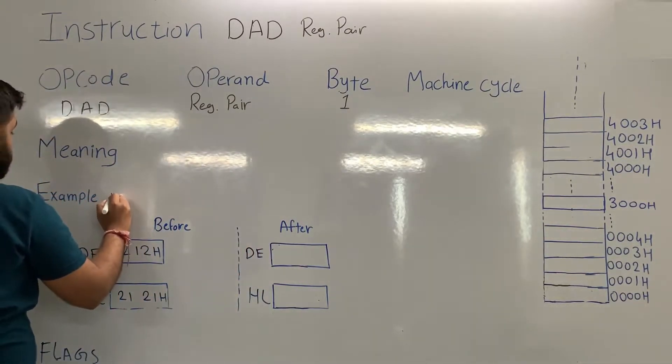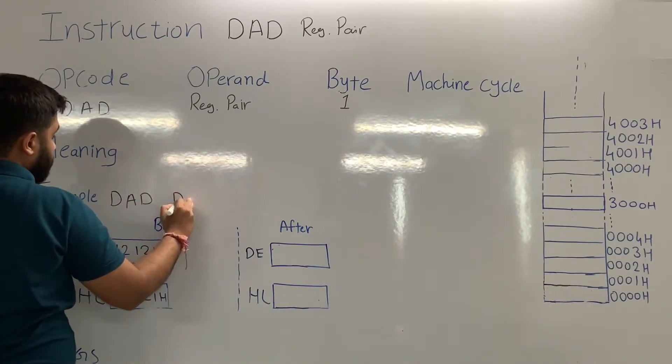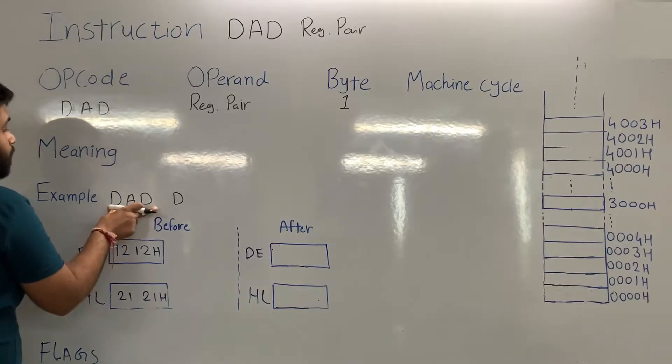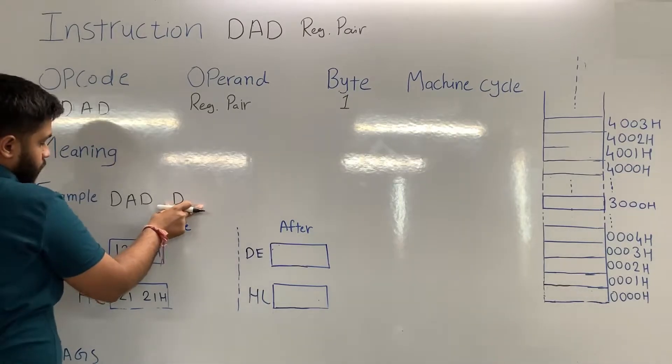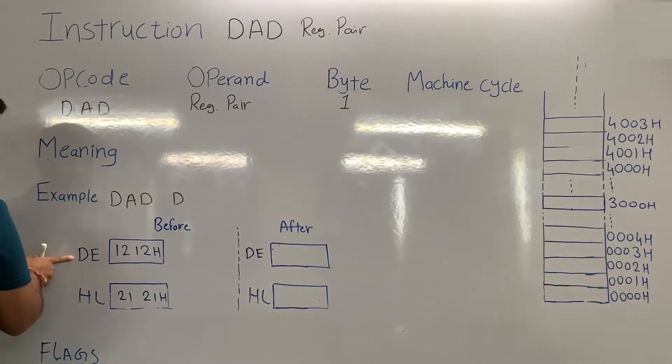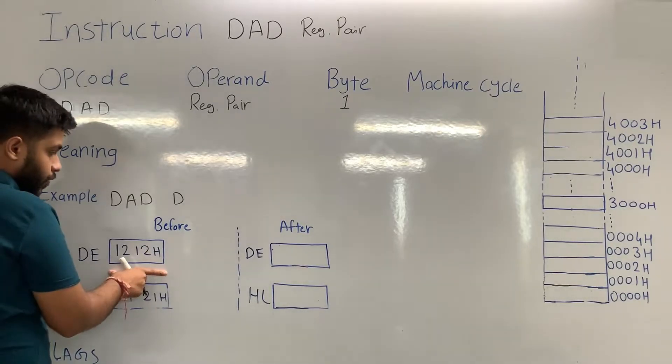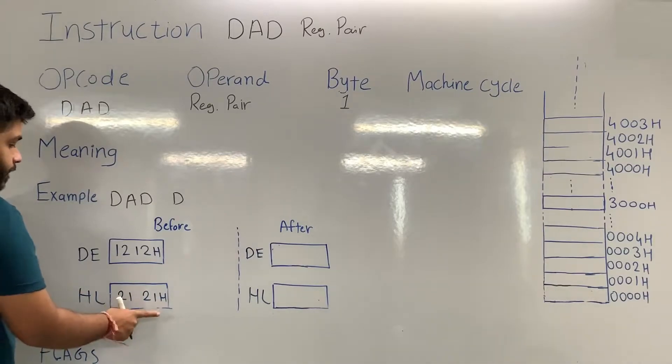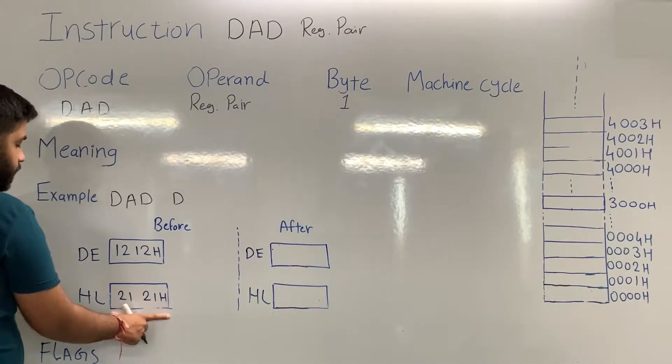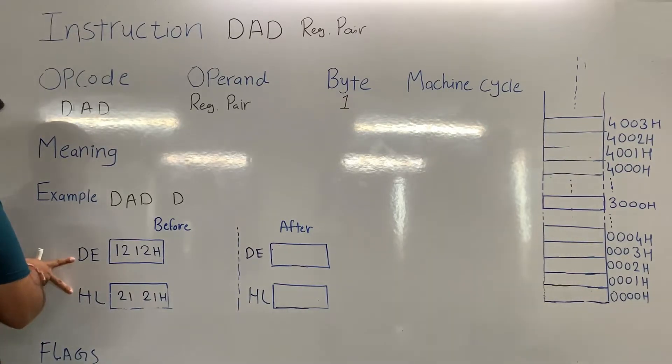Let's say example, suppose the example is DAD D, it means 16-bit addition of D pair with HL pair. So before the execution, the content of D pair is 1212H. It is a 16-bit value. The content of HL pair is 2121H. Again it is in hexadecimal, if you convert into binary, you will get 16-bit value. So content of these two register pairs is 16-bit value.